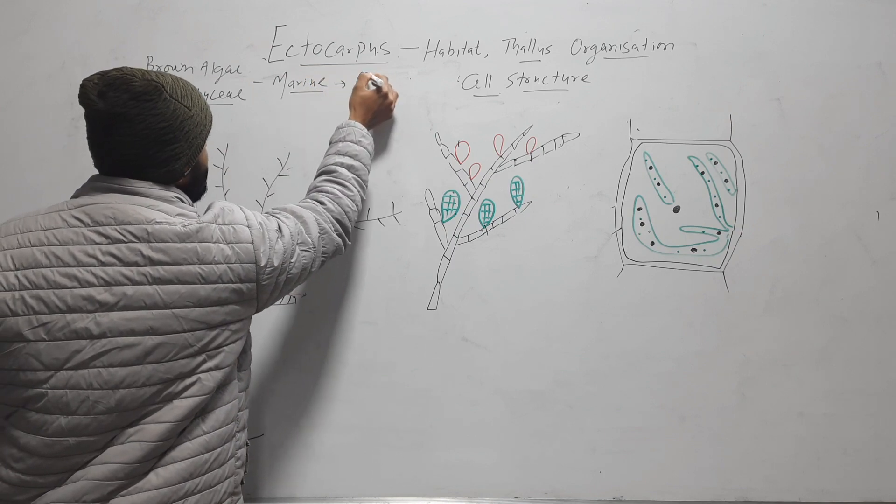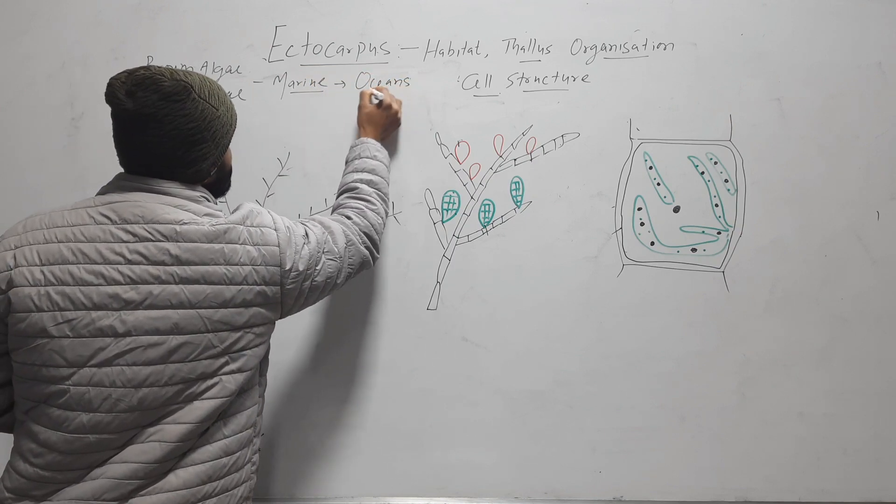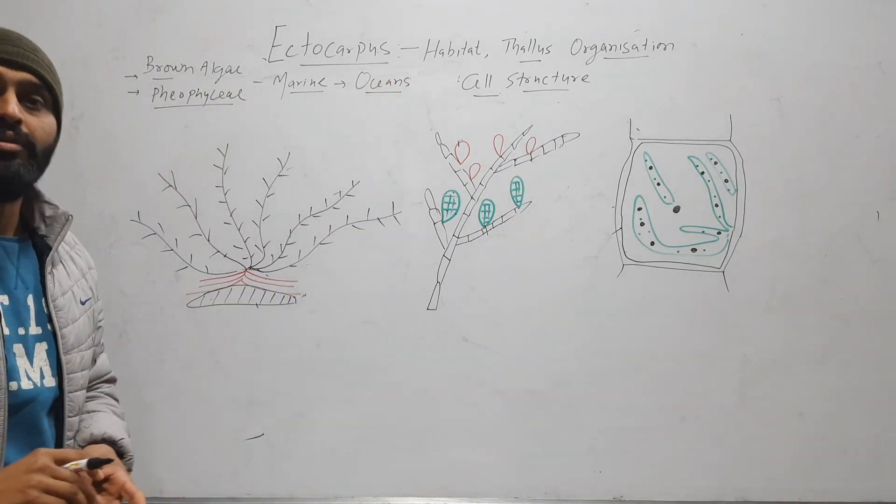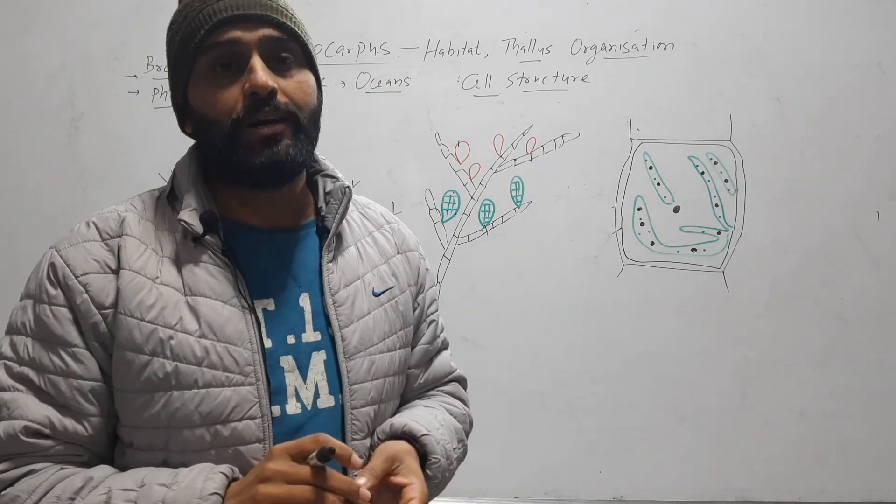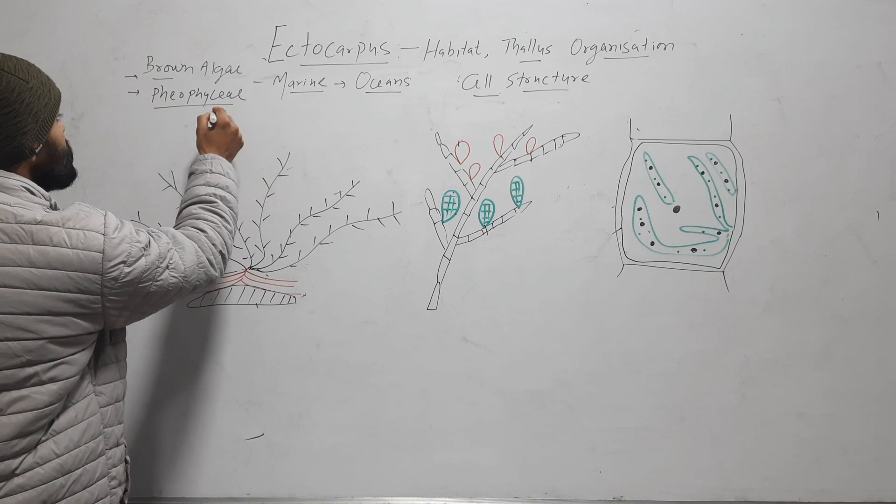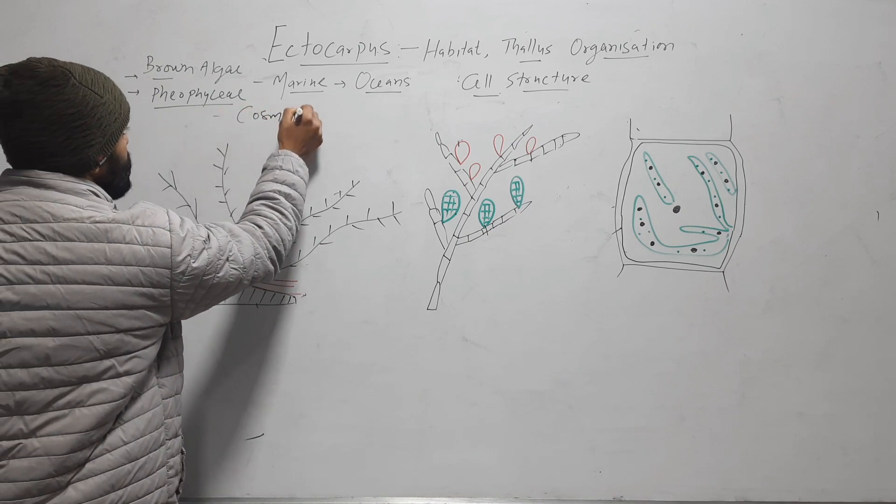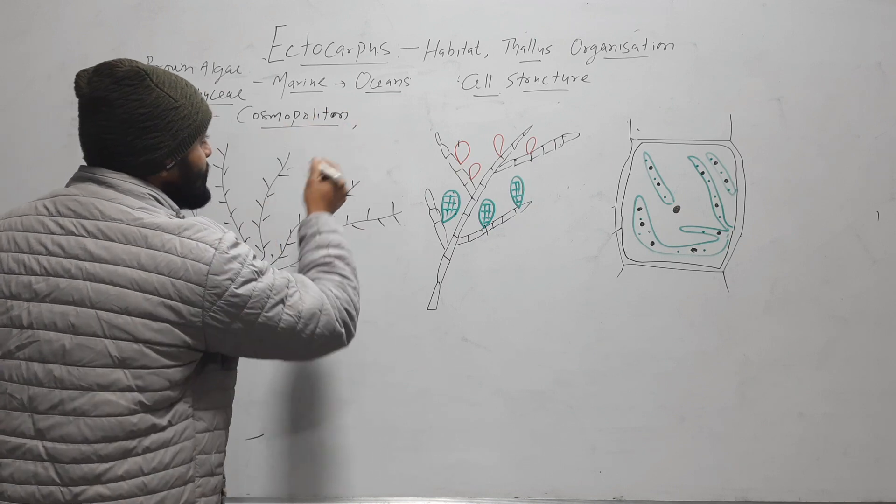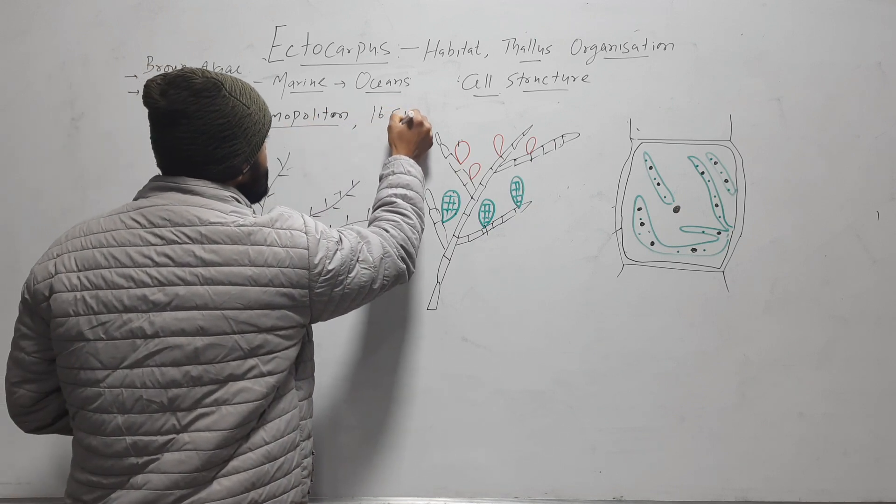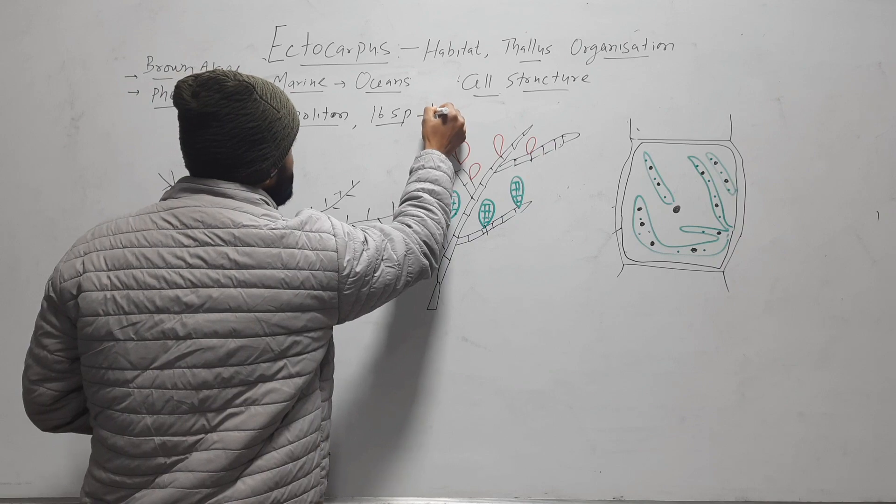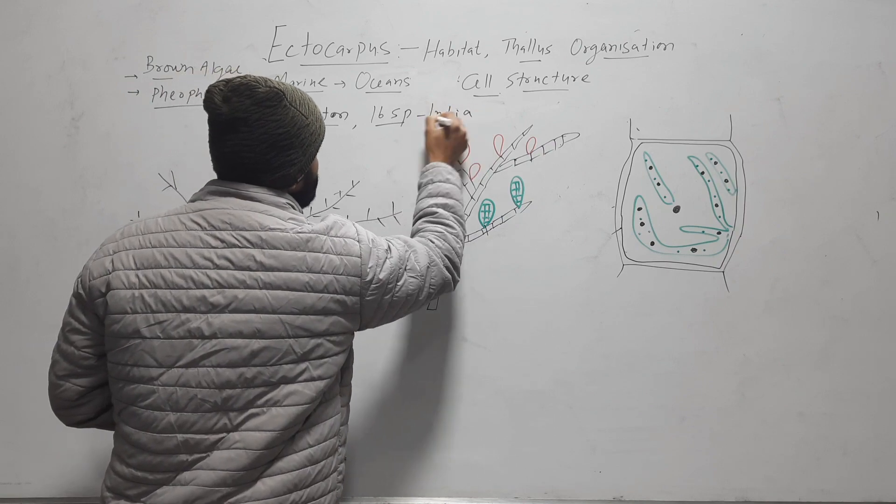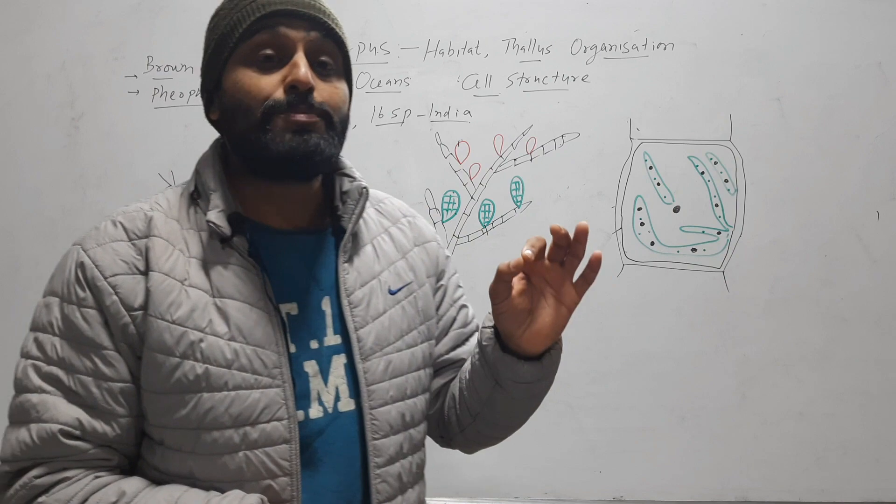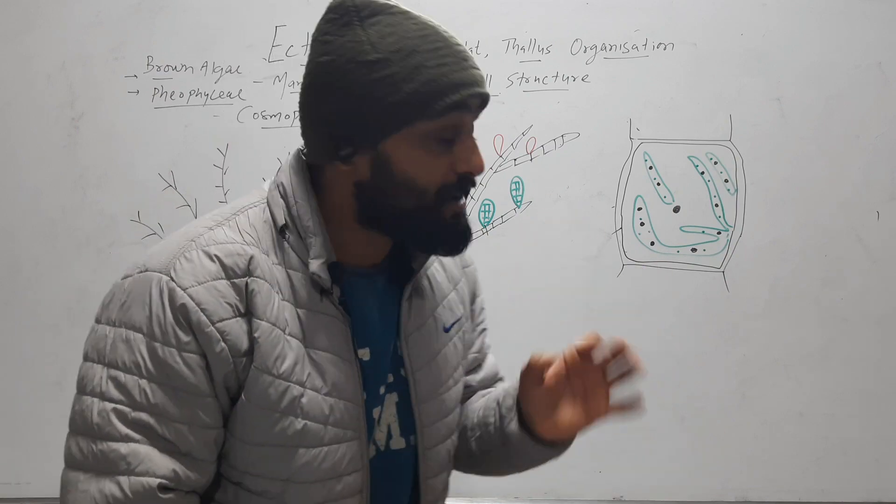That means it is found in oceans and it is found in every corner of the world. So its distribution is cosmopolitan. In India, 16 species of Ectocarpus are found.